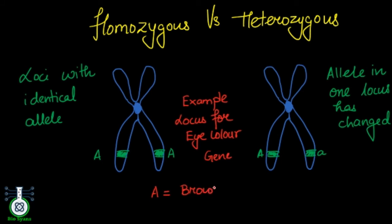These two traits with uppercase A signifying brown and lowercase a signifying the blue color. And the locus is the color of the eye.